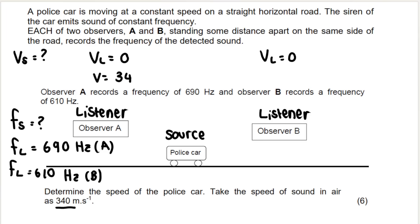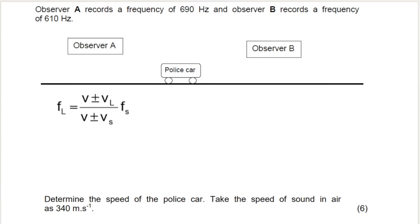The question says determine the speed of the police car. The speed of sound in air is given as 340 meters per second. Let's see if we can substitute into the equation. Let's confirm why I need to apply the formula twice — for simultaneous equations, when you have two listeners, there will be two formulas.